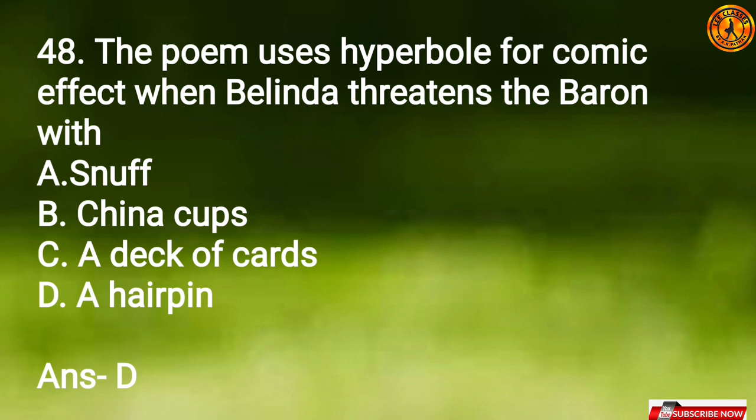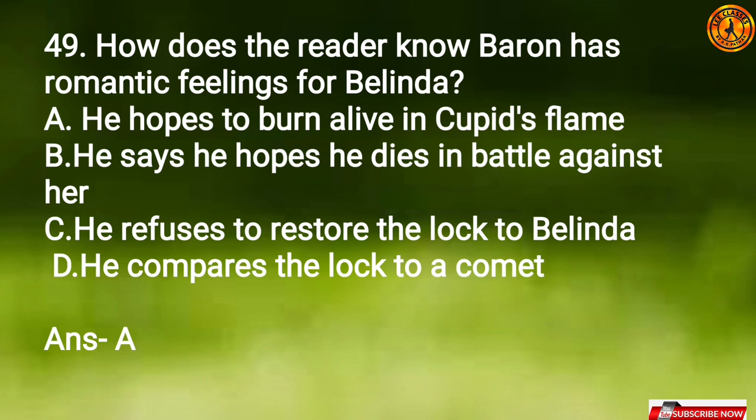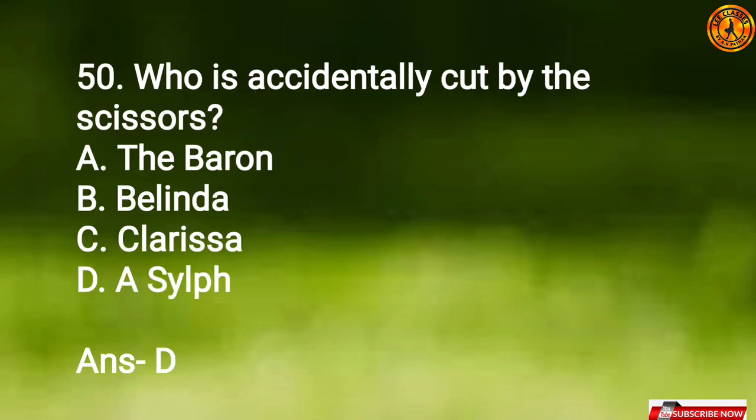Question 47: What reason does the Baron have for cutting the lock of hair? Option A, desire for beauty. Question 48: The poem uses hyperbole for comic effect when Belinda threatens the Baron with Option D, a hairpin. Question 49: How does the reader know the Baron has romantic feelings for Belinda? Option A, he hopes to burn alive in Cupid's flame. Question 50: Who is accidentally cut by the scissors? Option D, a sylph.